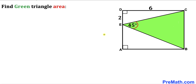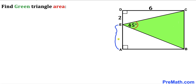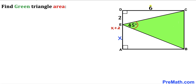Let's focus on rectangle ABCD. One of its side lengths is 6 units. Let me label side EA as x units, which makes the whole length AD equal to x plus 2. So the side lengths of rectangle ABCD are 6 and x plus 2.